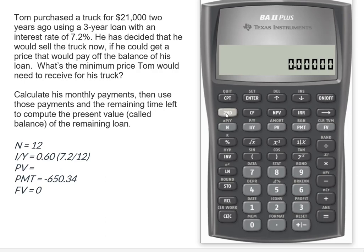So I'm going to plug in my 12 months as my N, my 0.60 as my I/Y. His payment was $650.34. We need to make that a negative because that's a payout, right? We don't want them to think we've been getting payments of $650. And again, remember our goal is that the future value of the loan be 0. So let me compute my present value.